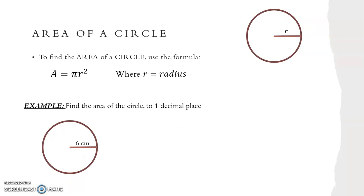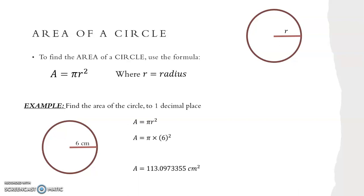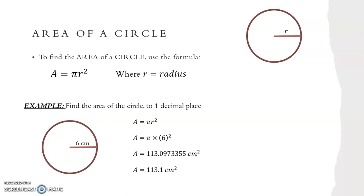To find the area of a circle we use the formula A equals pi R squared, where R stands for the radius. To find the area of the circle to one decimal place, we write out our formula A equals pi R squared and substitute in our radius. So A equals pi times 6 squared. We put this into our calculator and get A equals 113.0973355 centimetres squared. However, the question asked us to round to one decimal place, so our answer is A equals 113.1 centimetres squared.